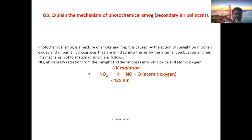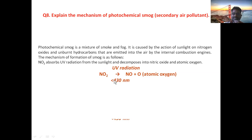NO2 absorbs UV radiation from sunlight and decomposes into nitric oxide and atomic oxygen by the following equation. NO2 under UV radiation of wavelength less than 430 nanometers forms nitric oxide and atomic oxygen.